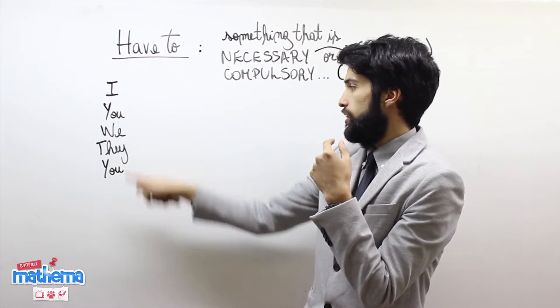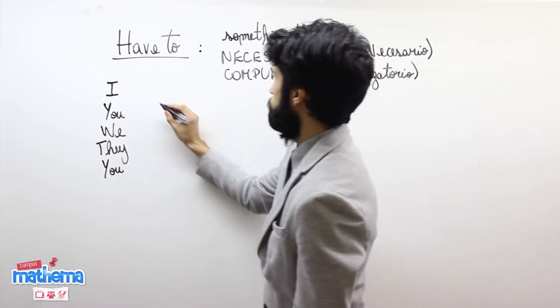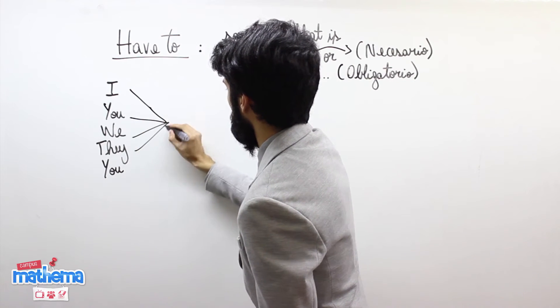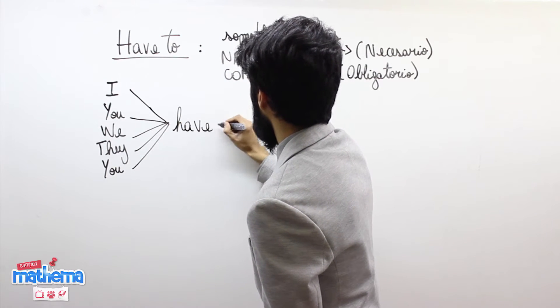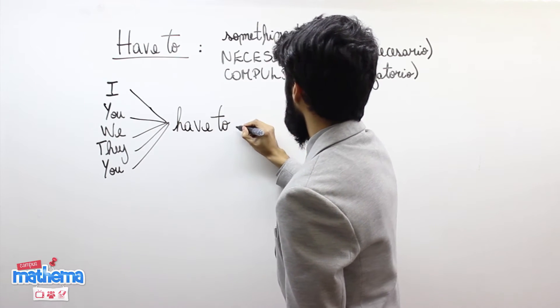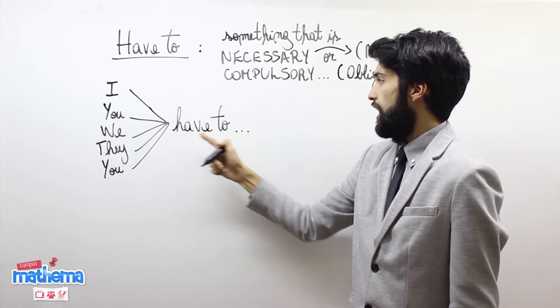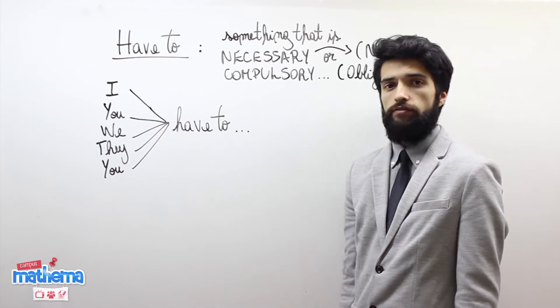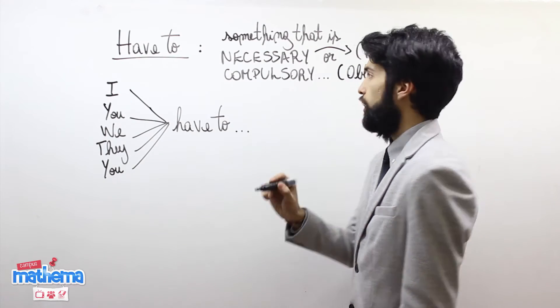With these pronouns, fácil. I, you, we, they, and you, seguido de have to, más lo que continúa en la oración. Puedo decir I have to, you have to, we have to, they have to, and you have to.